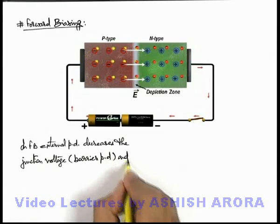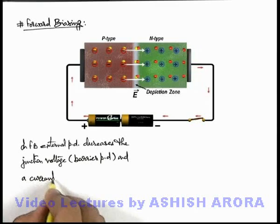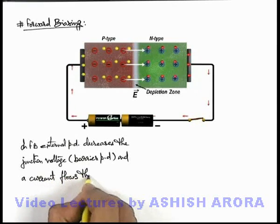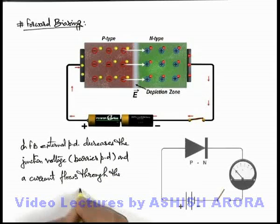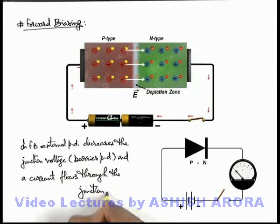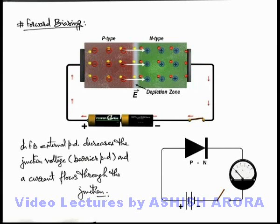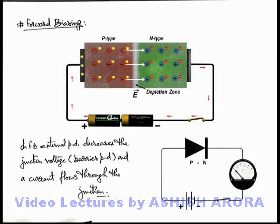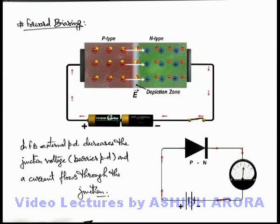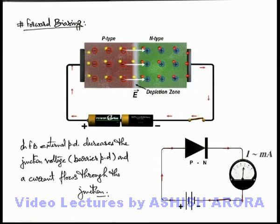As a result, a current flows through the junction. The same phenomenon can be explained using the circuit diagram. This picture shows a p-n junction diode in its symbolic form, with a battery connected to it. When the switch is closed, a clockwise current flows through the junction, and the connected ammeter records a current which is generally of the order of milliamperes, depending on the potential difference applied. This is called forward biasing.